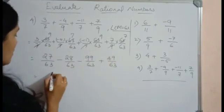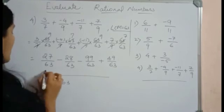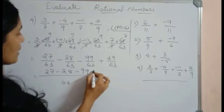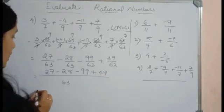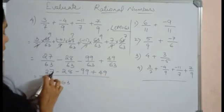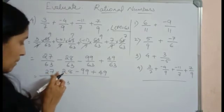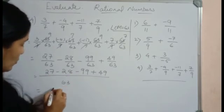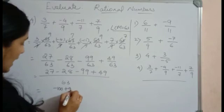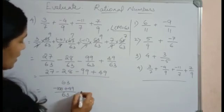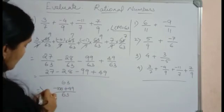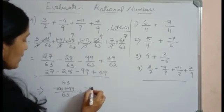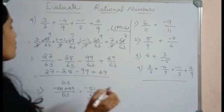Let's write it. So this will be upon 63: 27 - 28 - 99 + 49. That is equal to 27 and -28 is -1. -1 and -99 is -100. So we'll write -100 + 49 divided by 63. Now that's equal to -100 + 49 will be -51 divided by 63. This is your final answer.